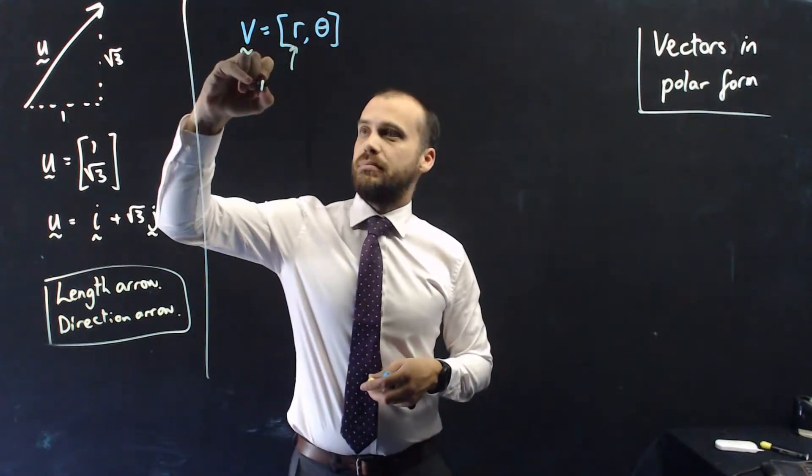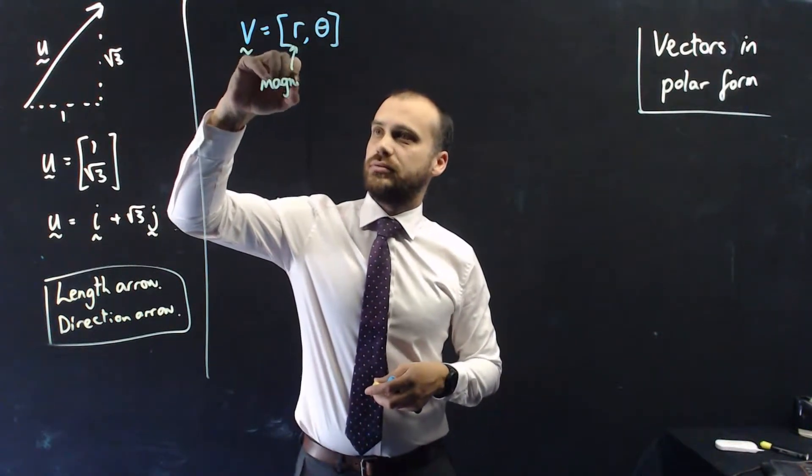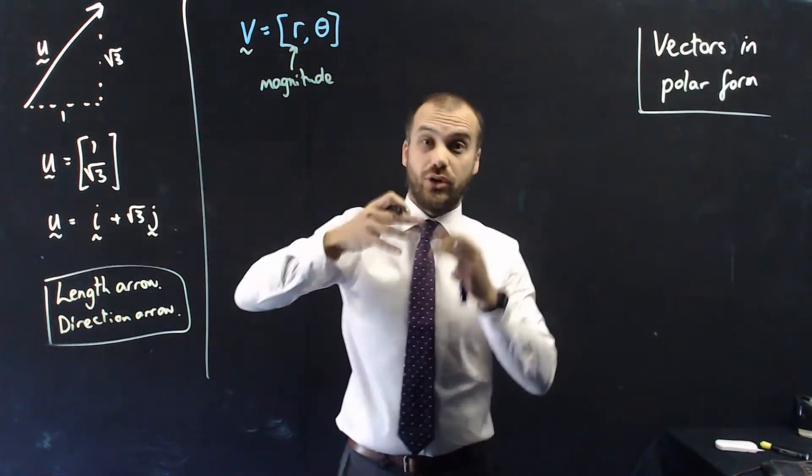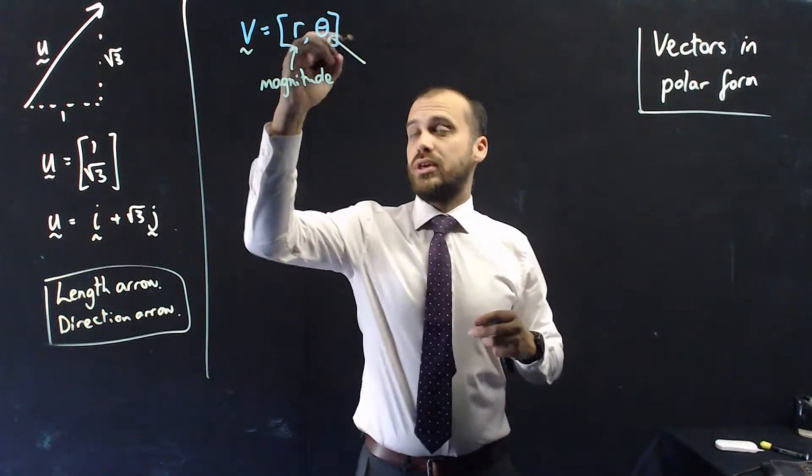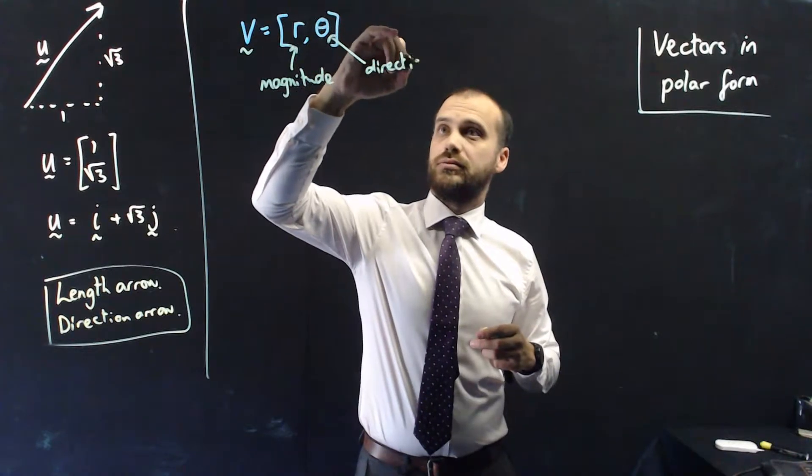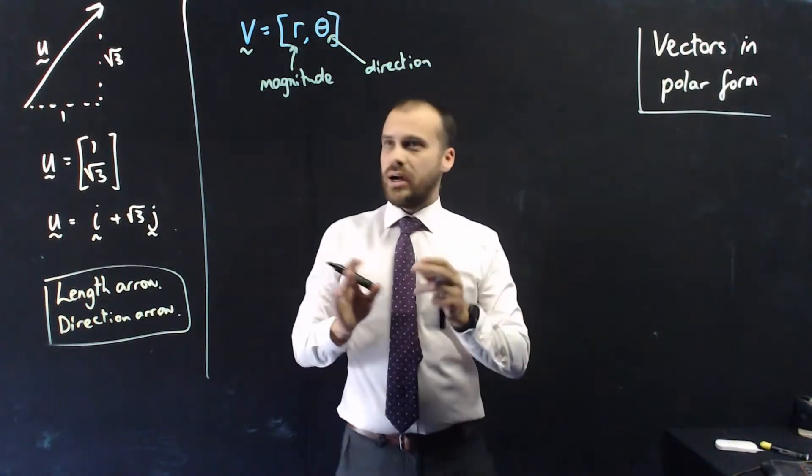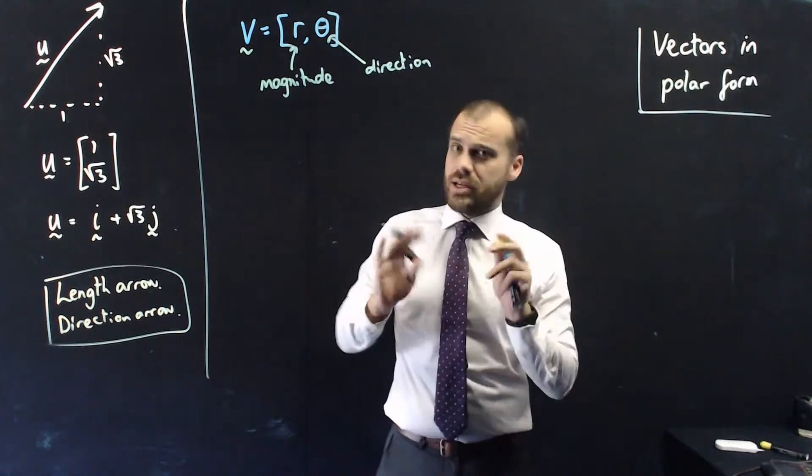Now, r is the magnitude of the vector, how long the arrow is, and theta is the direction. Alright, so the magnitude is easy, it's straightforward.